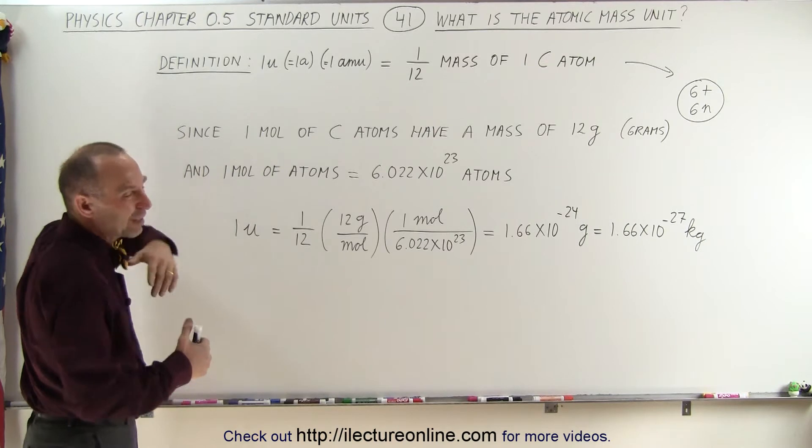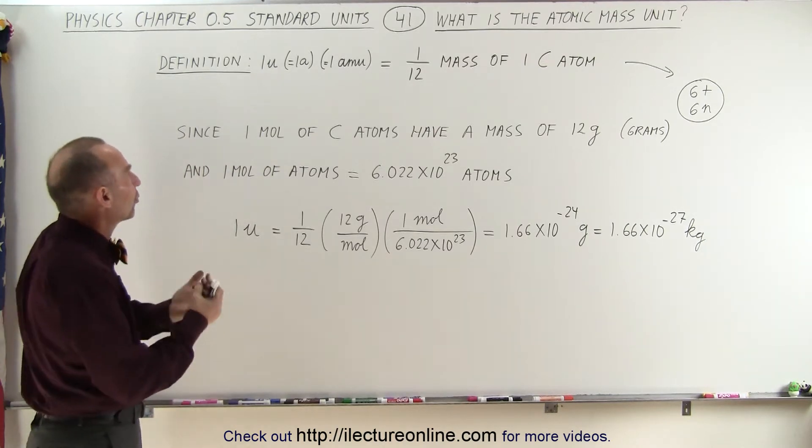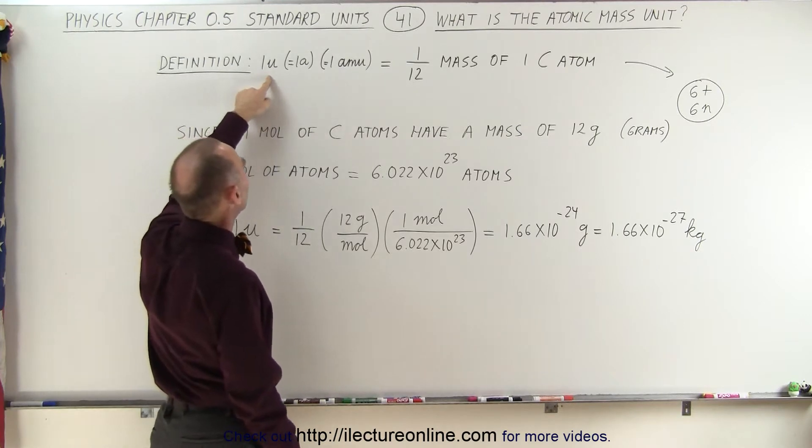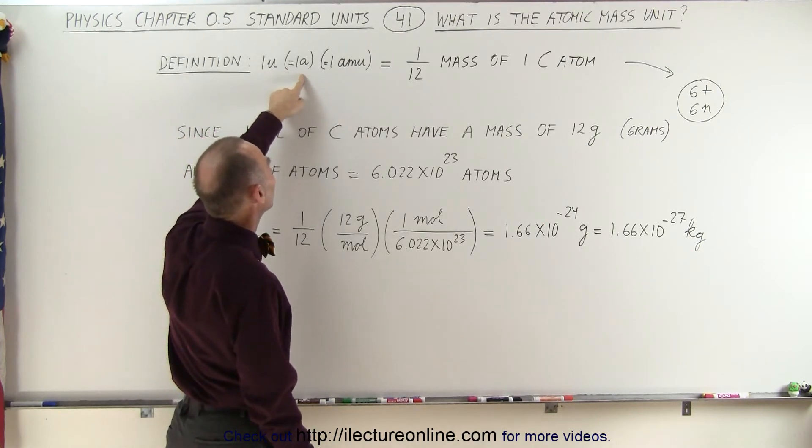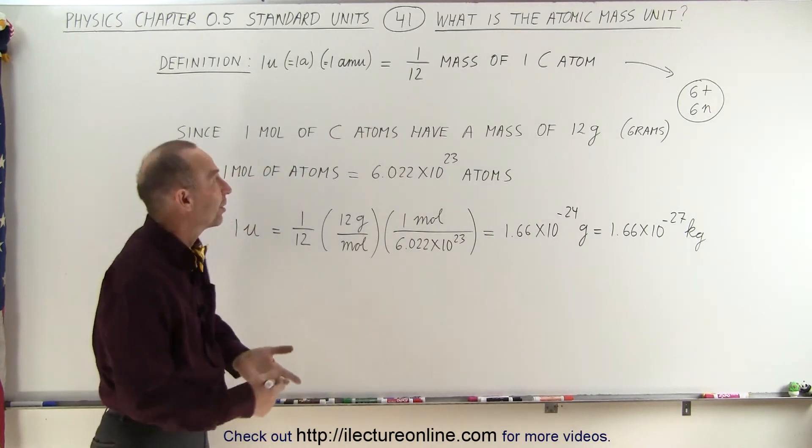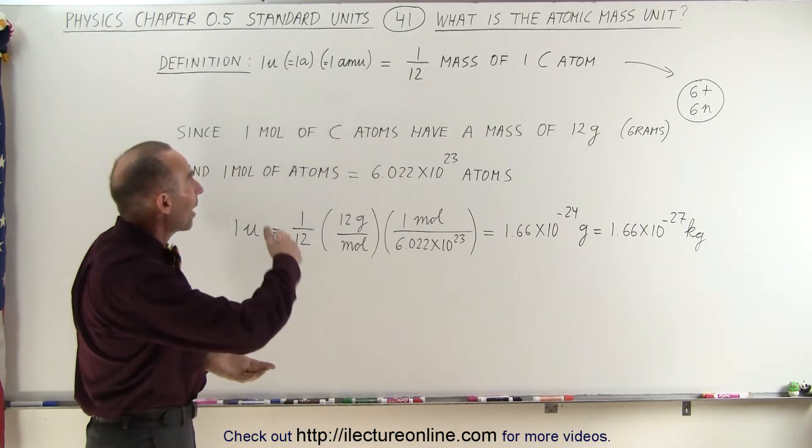By definition, we have different ways of expressing how to write a mass unit. We can write it as 1u, sometimes it's also written as 1a, sometimes it's written as 1amu. I prefer 1amu because it makes it clear that it's an atomic mass unit.